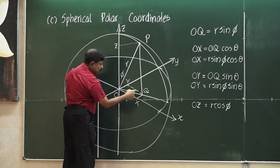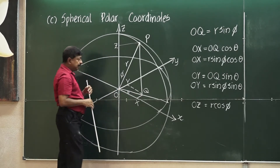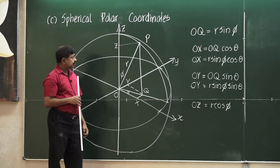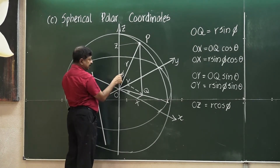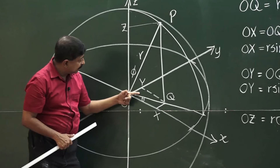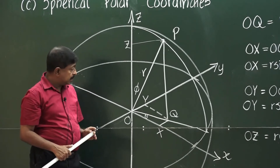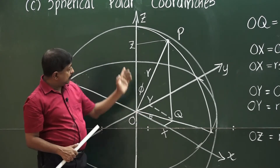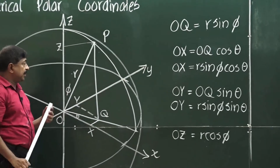The projection will be OQ. The angle between OQ and the positive direction of the X axis can be taken as theta. From this diagram, you can see that if this is R and this is phi, the angle between OP and OQ is 90 minus phi. Therefore, this length OQ is R sin phi.